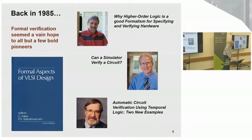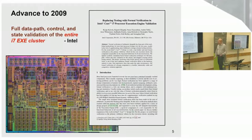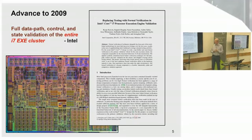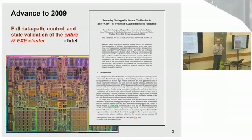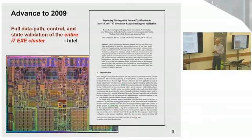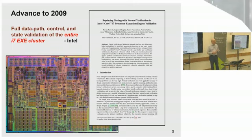Advancing now to 2009, there was a terrific paper about replacing simulation testing entirely with formal verification for the whole Core i7 execution cluster on the chip. The execution cluster is the part that does floating point calculation, integer calculation, and all the numerical work. This was the full datapath control and state validation of the entire i7 execution cluster. I think this is a huge success for our area in formal verification and should be a much better known paper.